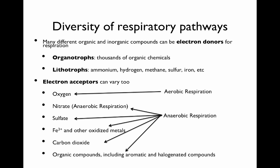That is not the only respiratory pathway. There are many different organic and inorganic compounds that can be electron donors for respiration, generating high-energy electrons for electron transport chains — thousands of organic chemicals can serve in this process. In lithotrophs, compounds such as ammonia, hydrogen, methane, sulfur, and iron serve as electron donors. The electron acceptors can vary too. Aerobic respiration uses oxygen, but microorganisms can use many other terminal electron acceptors — this is called anaerobic respiration — including nitrate, sulfate, iron, other oxidized metals, carbon dioxide, and organic compounds including aromatic and halogenated compounds.